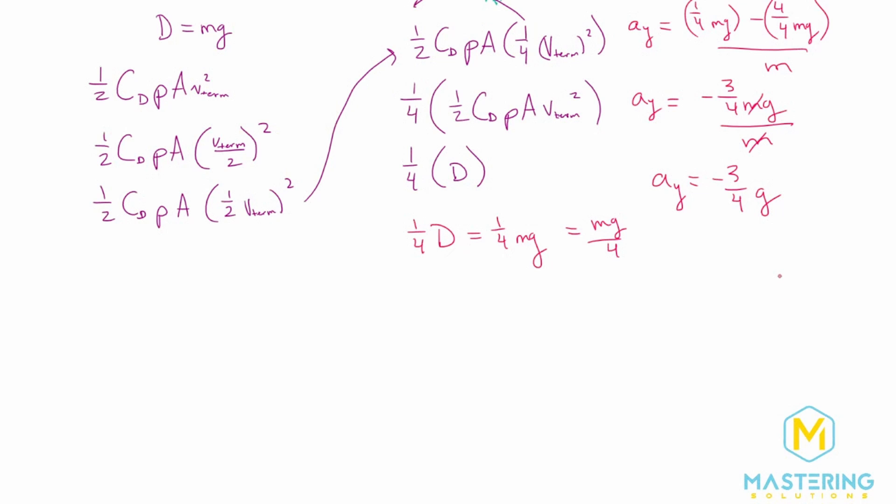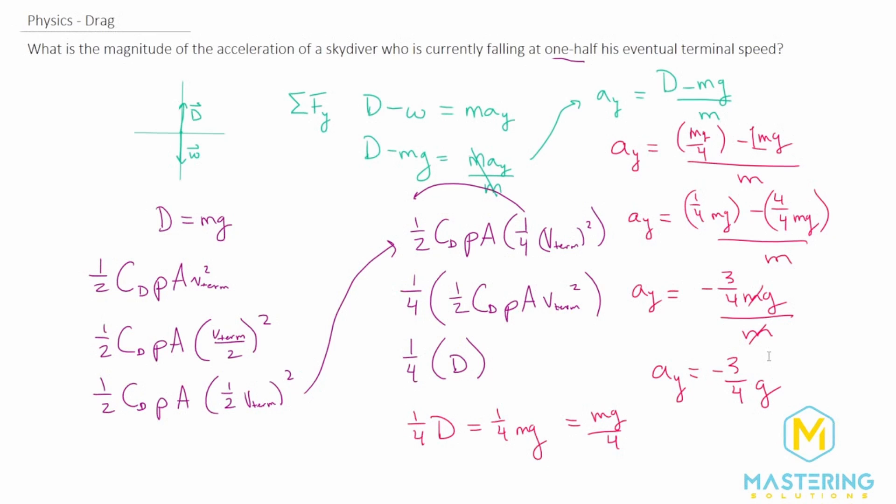So we went through all of that. And it's interesting because what we just proved mathematically is that for this question, the mass of the skydiver doesn't matter. The area, all these different things don't matter. We can use all that we did to find the acceleration of the skydiver just by using gravity.